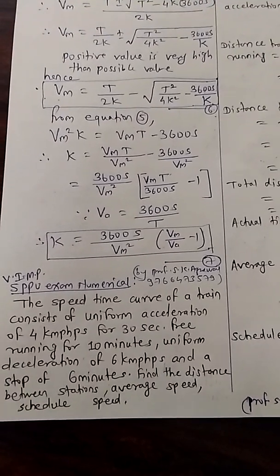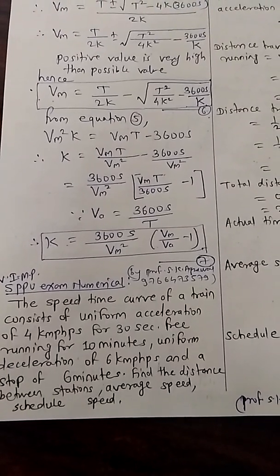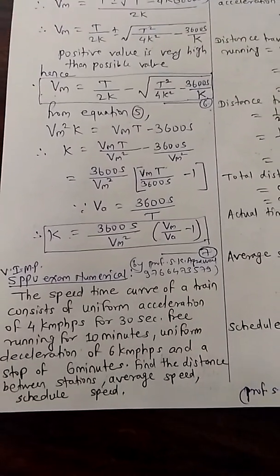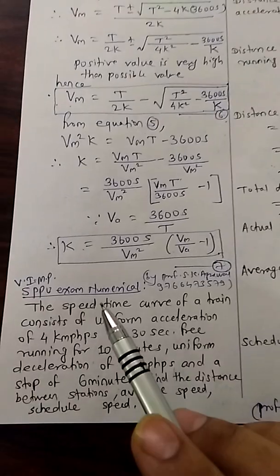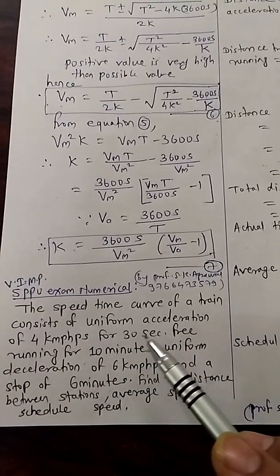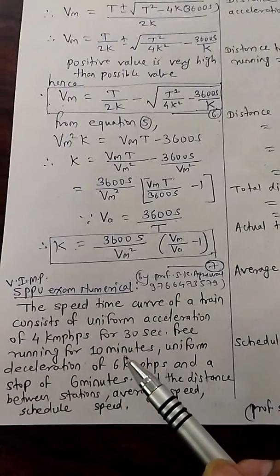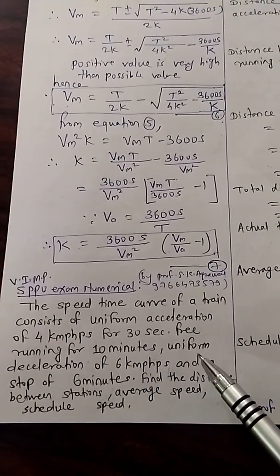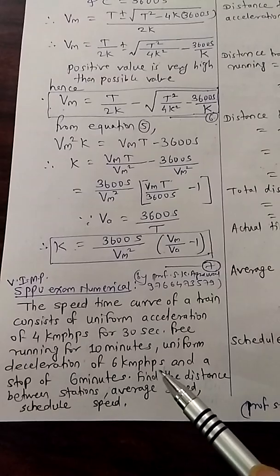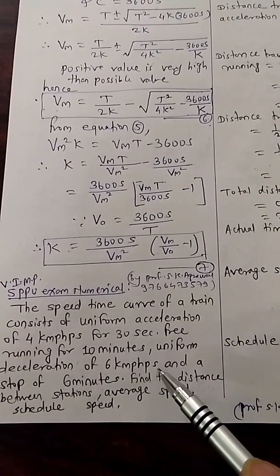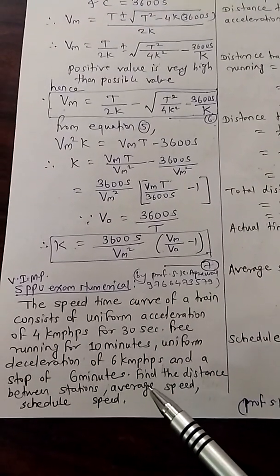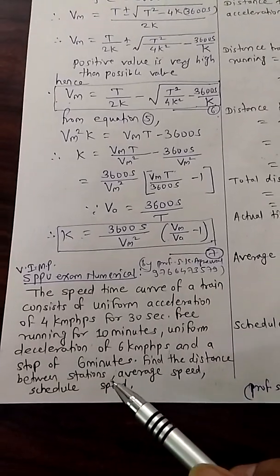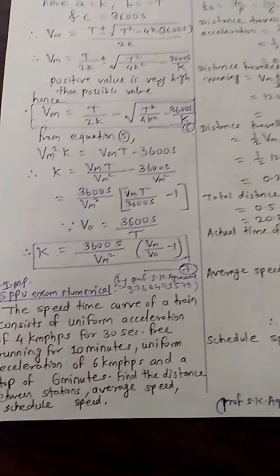One of the numerical is commonly asked based on trapezoidal speed time curve. The speed time curve of a train consists of uniform acceleration of 4 kmph per second for 30 seconds, free running for 10 minutes, uniform deceleration of 6 kmph per second and a stop of 6 minutes. Find the distance between station, average speed, schedule speed.